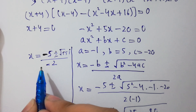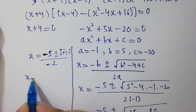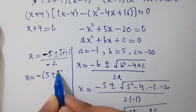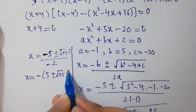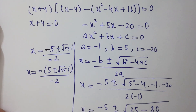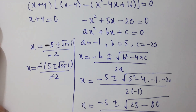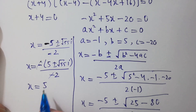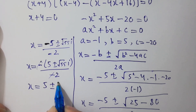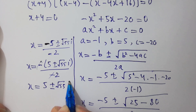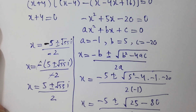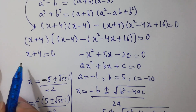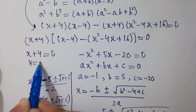We can cancel the minus here. x equals minus 5 plus or minus root 55i, divided by minus 2. Minus and minus will cancel. We get x equals 5 plus or minus root 55i, divided by 2. So here x plus 4 equals 0, giving x equals minus 4.